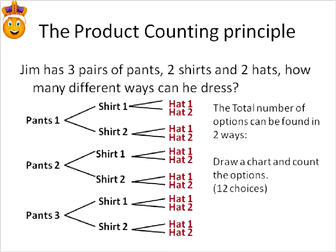Here I've colored it in — there are 12 options. So we count the total number colored in red and there are 12 options. For example, pants number three, shirt number one, hat number two would be one of those options. Everyone in the final column is a different option choice.